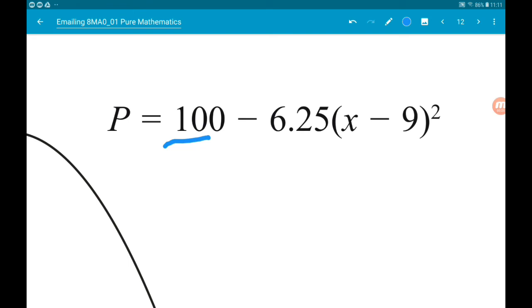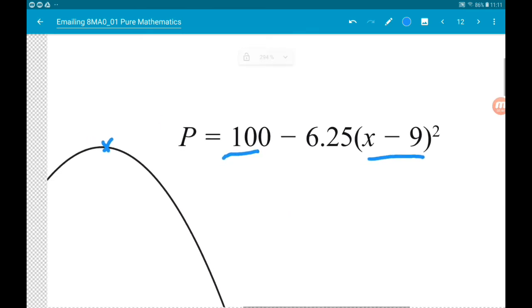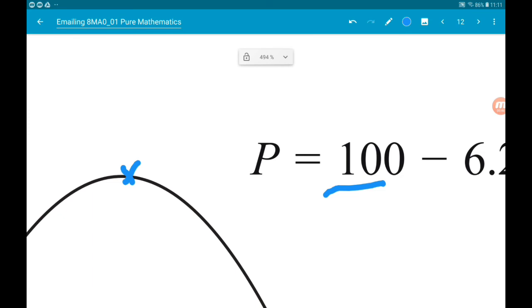Now we're also going to need part 2, what the x value is that gives us the maximum. To the value of x, and that makes the bracket turn to 0. So x is 9. So the coordinates of this point are 9, 100.